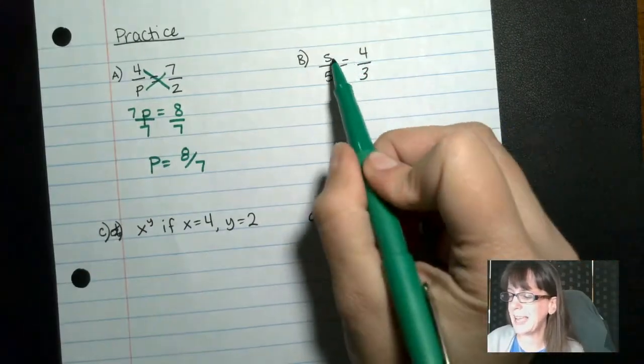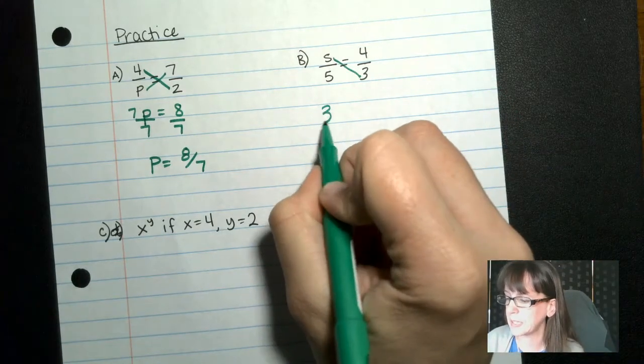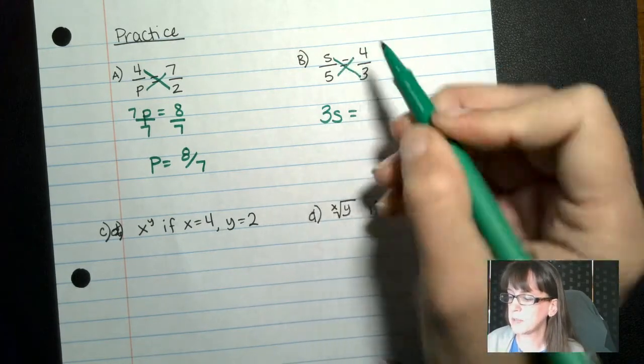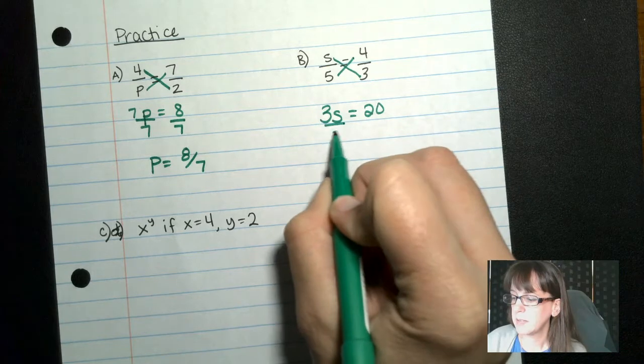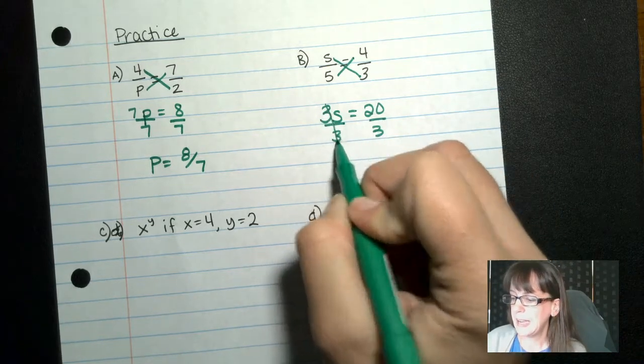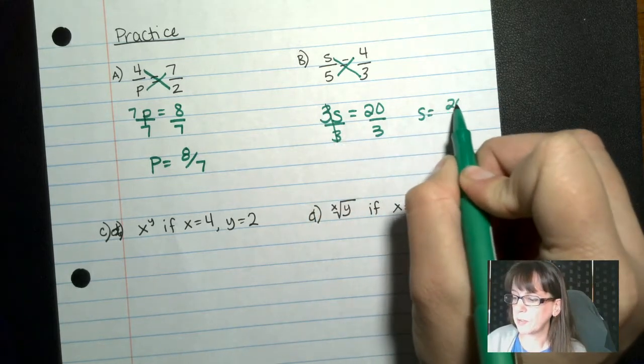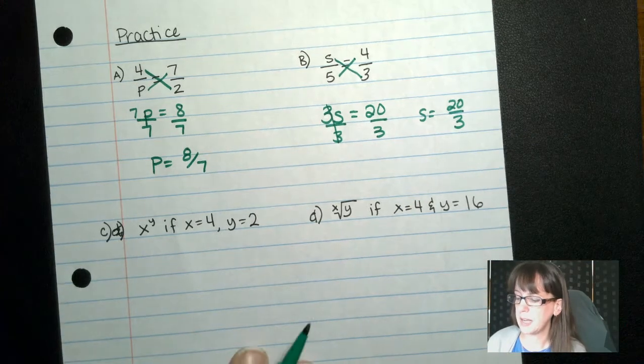Now over here, same idea. S times 3 gives me 3s equals 4 times 5, which is 20. Divide both sides by 3. S equals 20 over 3, because there's nothing I can do to reduce that. All right.